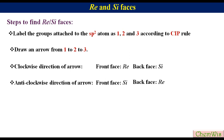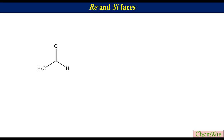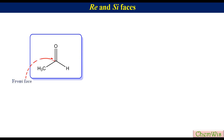Now let's understand with examples. Taking acetaldehyde: the molecule is kept so the molecular plane is parallel to the plane of the paper, showing the front side face and back side face. Labeling the three groups attached to the center by priority as 1, 2, and 3, and drawing an arrow from 1 to 2 to 3: since the direction of the arrow is anti-clockwise, the front side face is the Si face and the back face is the Re face.